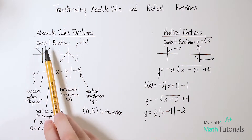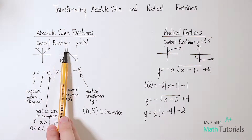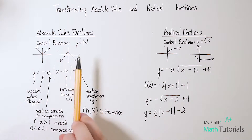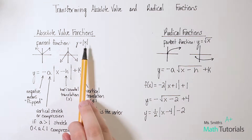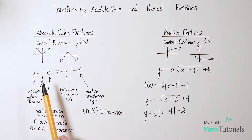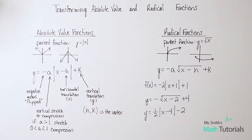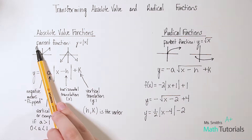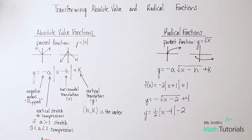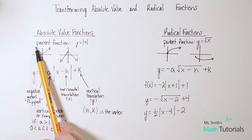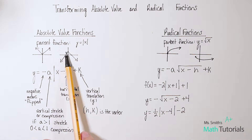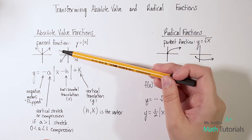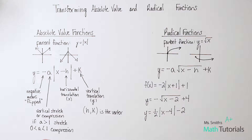Let's start with absolute value functions. The parent function — the original base function — is y equals the absolute value of x. Those two lines outside of x indicate it is an absolute value. This is how the parent function looks when graphed. It's a v-shape, and I like to think 'v for value.' It could open upward or downward, and doesn't have to fall directly on the y-axis — very easy to identify.